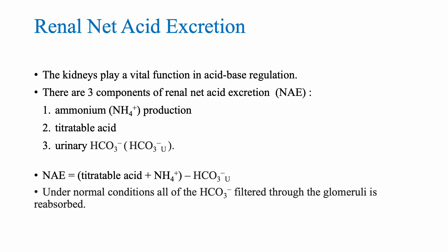Let's talk about renal net acid excretion. The kidneys play a vital function in acid-base regulation. For renal net acid excretion, we have three components. Number one, and the most important by far, is ammonium (NH4+) production. Second in importance is titratable acidity. Number three is urinary bicarbonate. So net acid excretion equals titratable acidity plus ammonium excretion minus bicarbonate — meaning we have to reabsorb all the bicarbonate; otherwise, if you lose bicarbonate, you will have more acidosis.